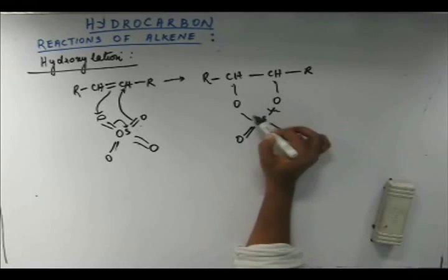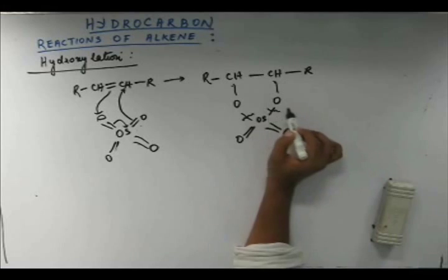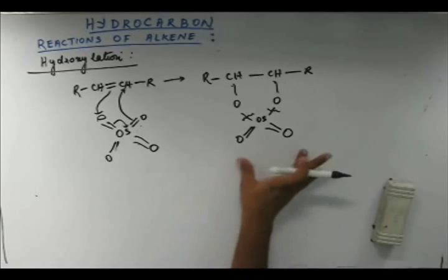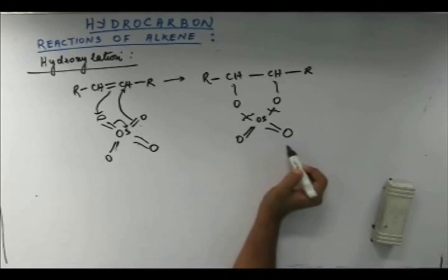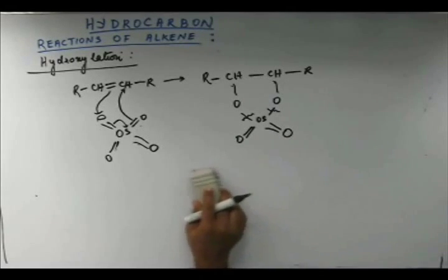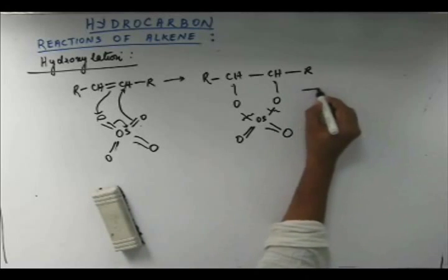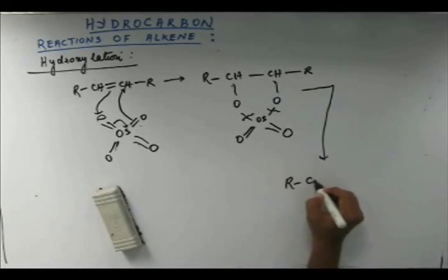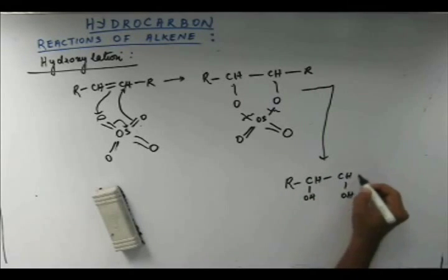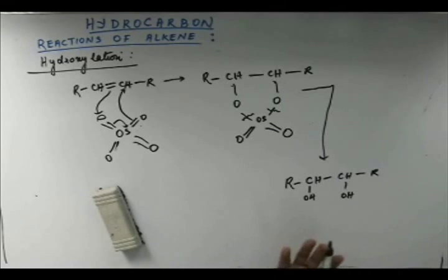Then again there is cleavage between oxygen and the metal. The bond breaks, two -OH groups go along with the carbons giving us a glycol, and OsO₂ comes out. The OsO₂ will again react with another alkene, and ultimately metallic osmium is formed — but what is of our interest is that we get a cis-glycol. This is hydroxylation — adding hydroxy groups to the alkene to get a vicinal dihydroxy compound, called a vicinal diol or glycol.